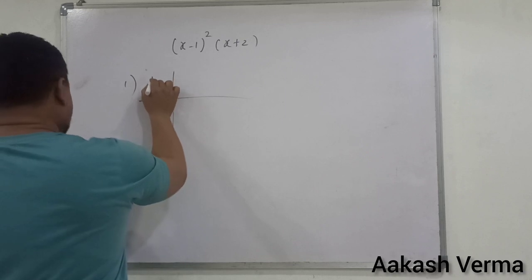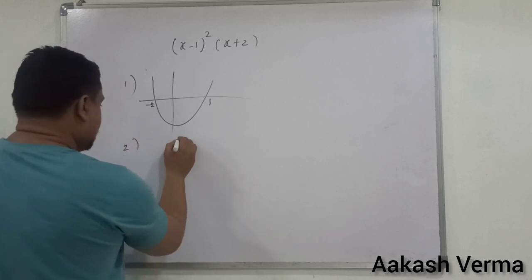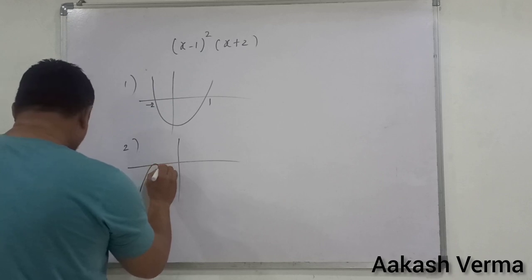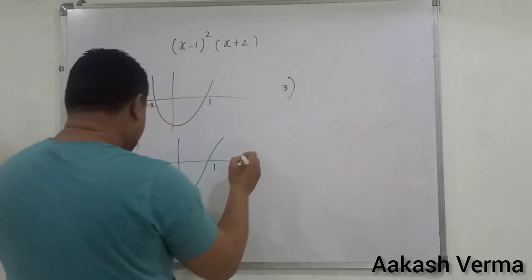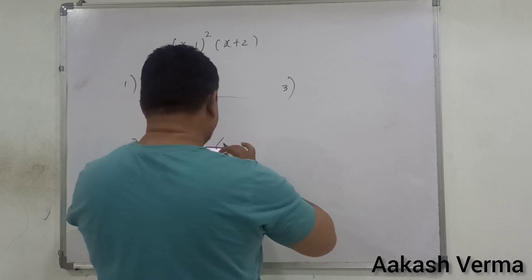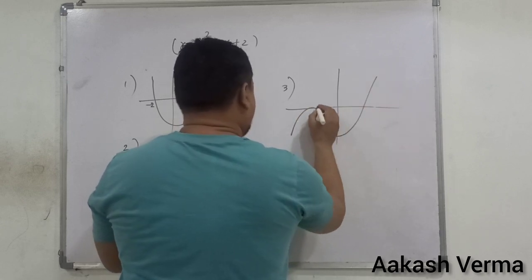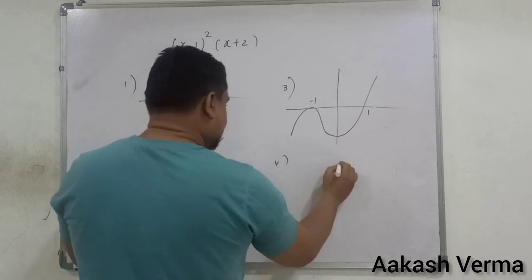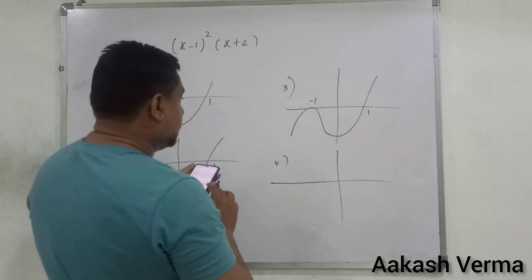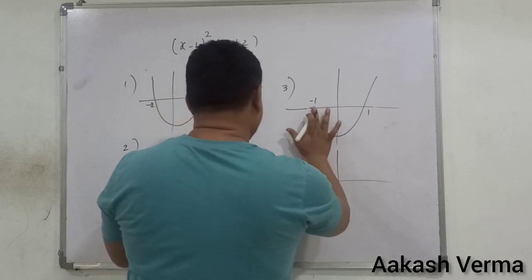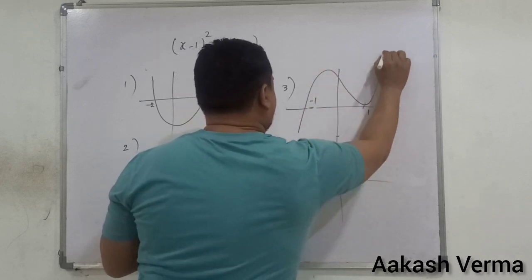The first option shows the graph at minus 2 and 1. The second option touches at 2, minus 2, and 1. The third option touches at minus 1 and 1. The fourth option touches at minus 2 and 1.